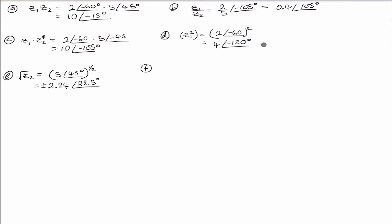F is the positive square root of the conjugate of Z2. The magnitude is still 5. Taking the conjugate of Z2 changes the sign of J, so the angle changes from 45 to negative 45 degrees. Notice that this is the same expression as E, with only the sign of the angle changed. So we have plus or minus 2.24 with an angle of negative 22.5 degrees.